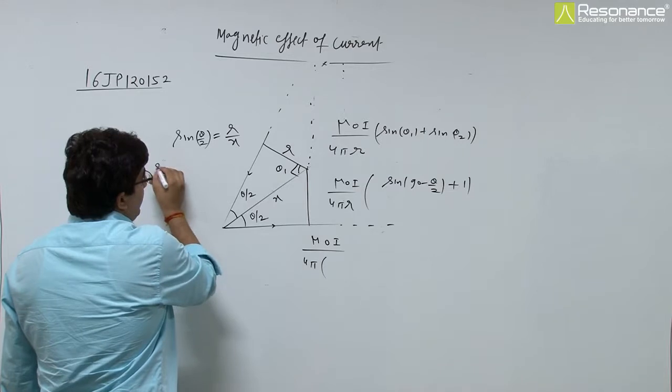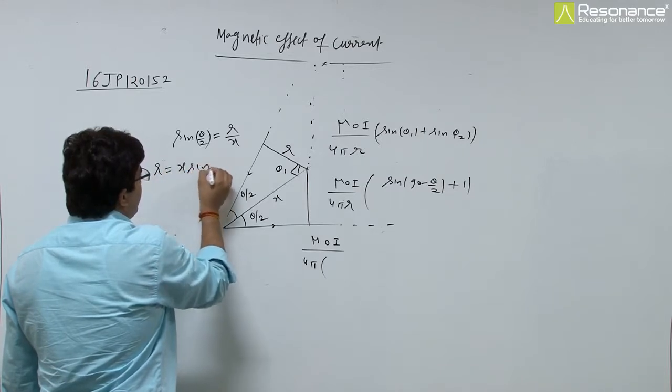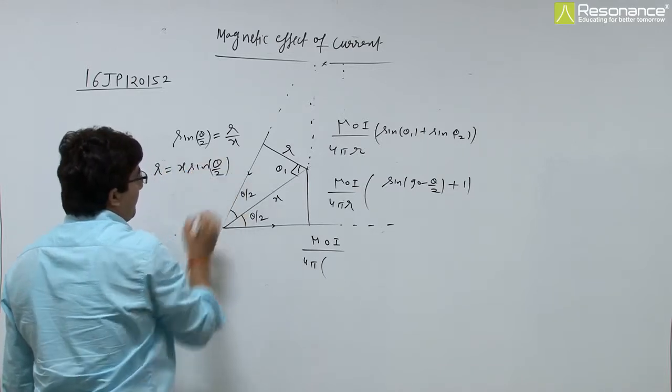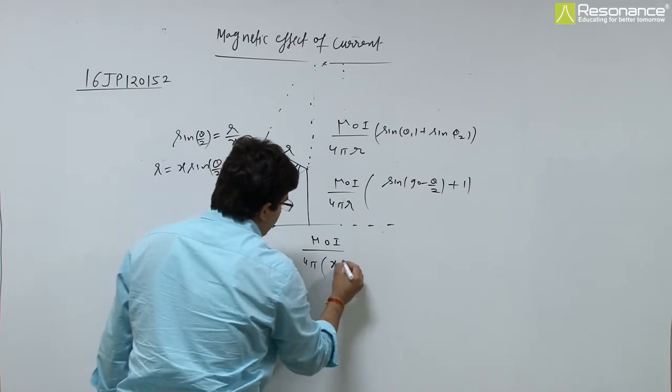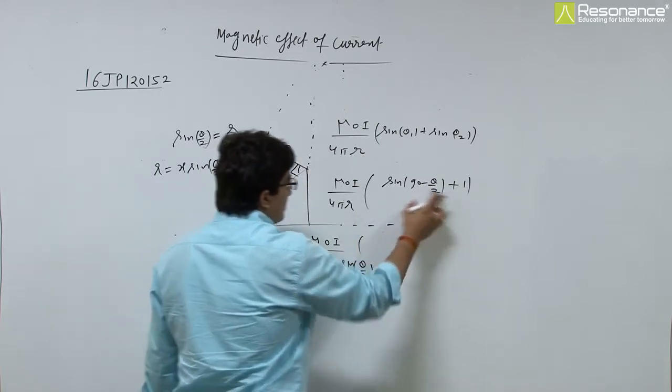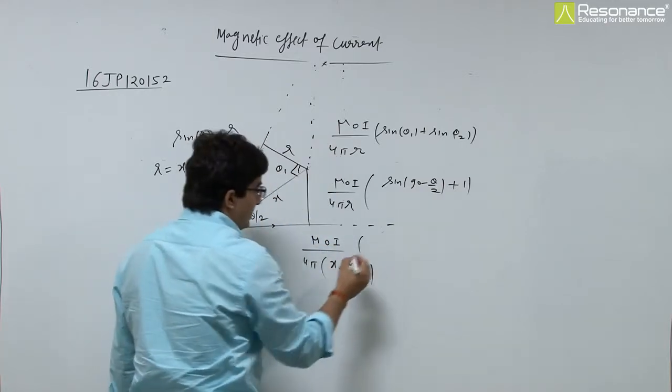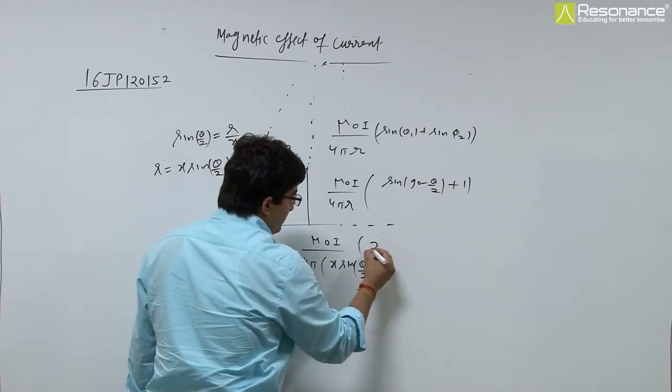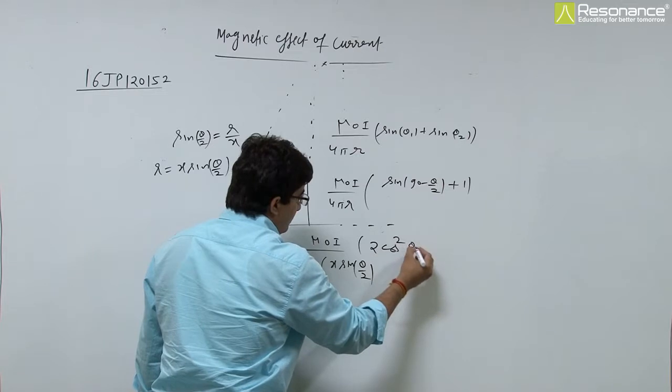So r can be written as x sin theta by 2. This is x sin theta by 2. This is 1 plus cos theta, 1 plus cos theta, can be written as 2 cos squared theta by 2.